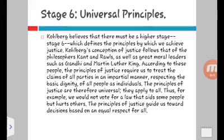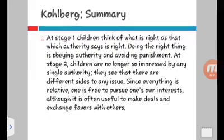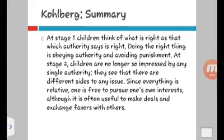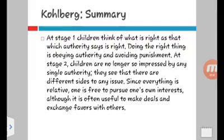For example, one would not vote for a law that aids some people but hurts others. The principles of justice guide us toward decisions based on equal respect for all. In summary, at stage one, children think of what is right as that which authority says is right — they depend on authority at home, such as parents or older siblings. Doing the right thing is obeying authority and avoiding punishment. At stage two, children are no longer so impressed by authority; they see different sides to any issue and begin to seek balance. Since everything is relative, one is free to pursue one's own interests.